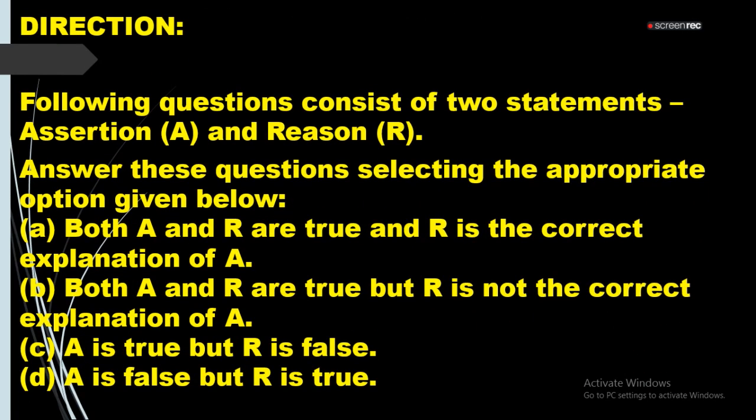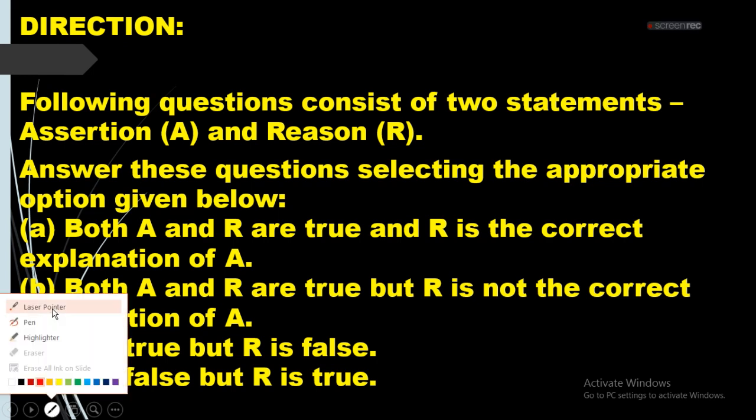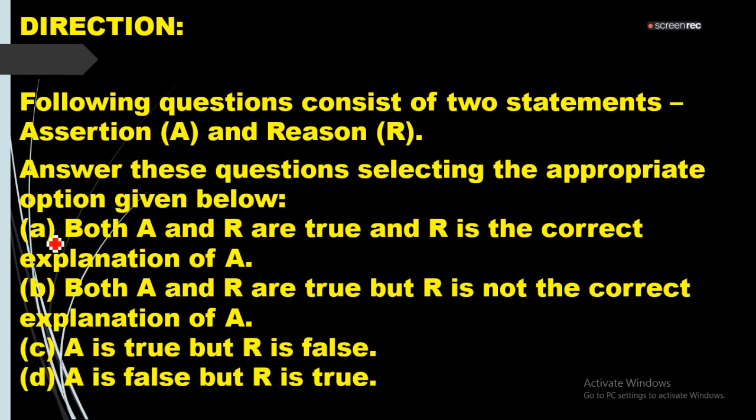First, assertion and reasoning. You are aware that assertion and reasoning questions have some criteria. According to that criteria, we are using it. First, option A. When we select option A, when we know both assertion and reasoning are true, as well as reason is the correct explanation of that assertion.